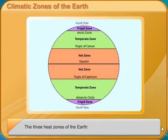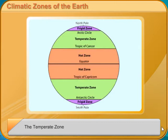The three heat zones of the Earth are: the Torrid Zone, the Temperate Zone, and the Frigid Zone.